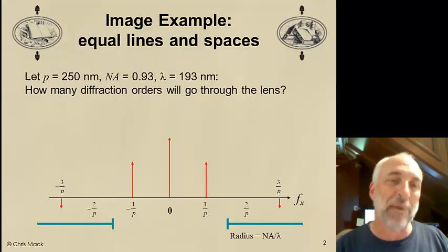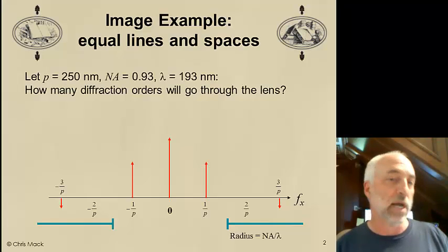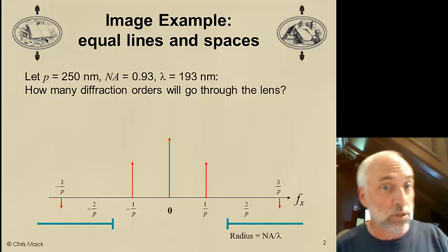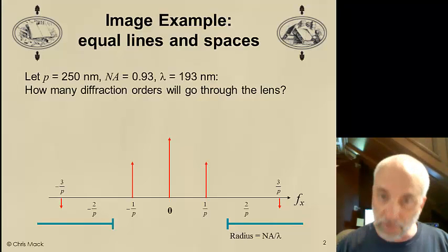Because the wafer size is four times smaller, but the NA is four times bigger. You work the problem on either side, on the mask side or the wafer side, you come up with the same answer. So, let's work it on the wafer side. The pitch in the wafer side dimensions would be 250 nanometers.